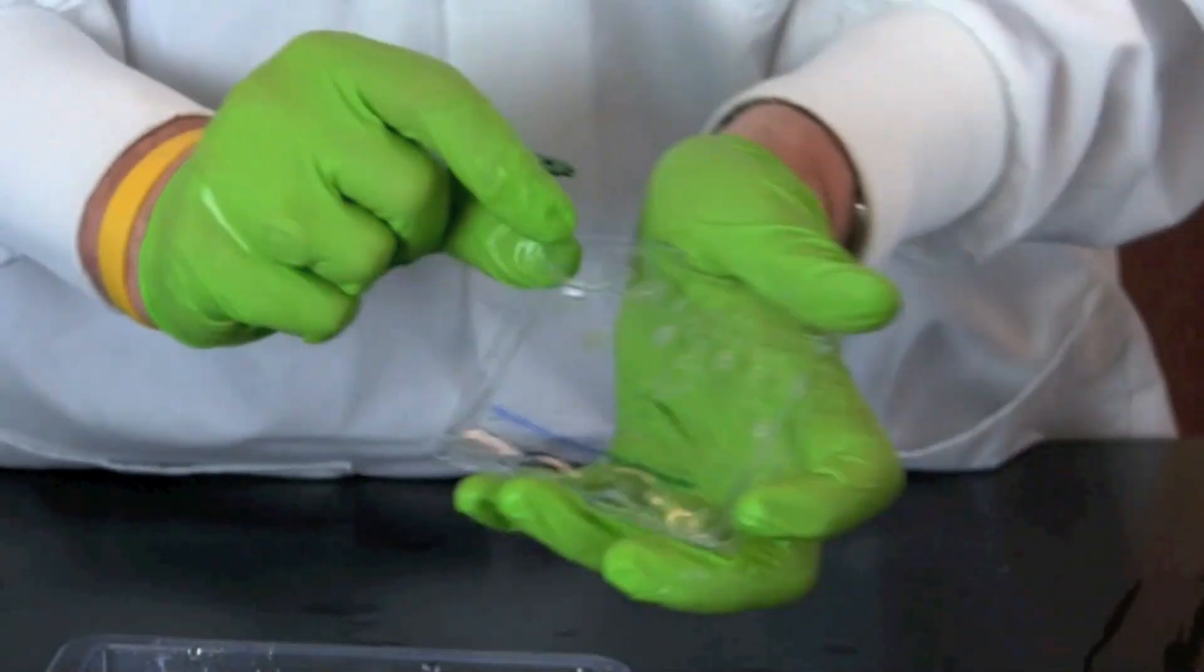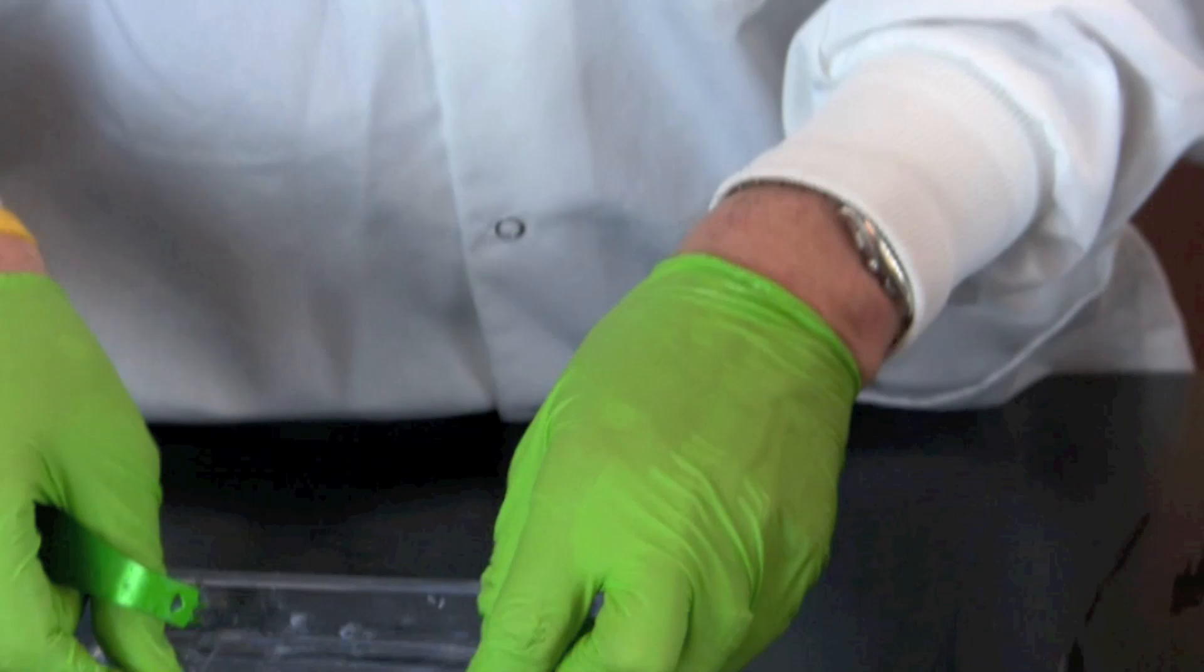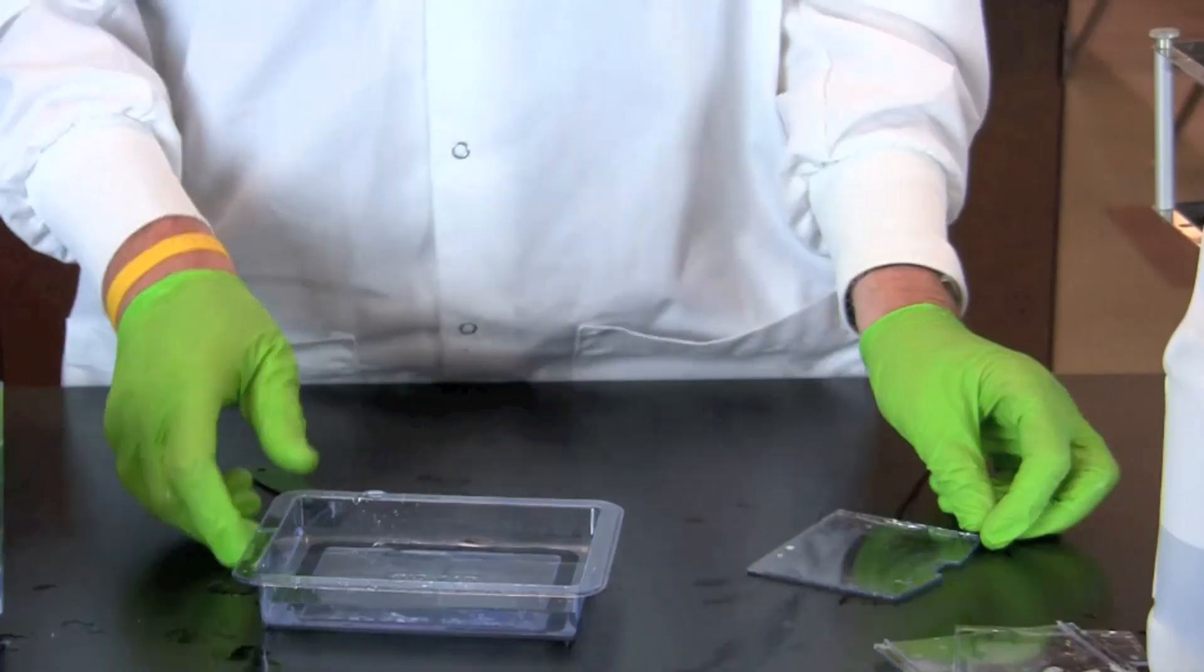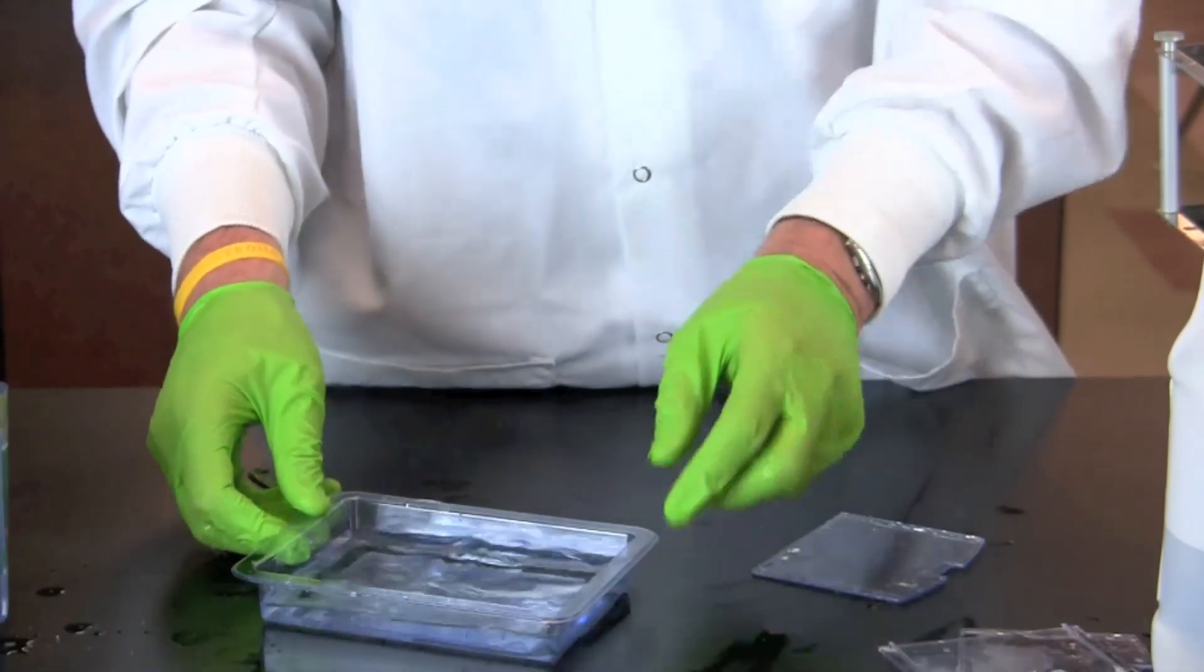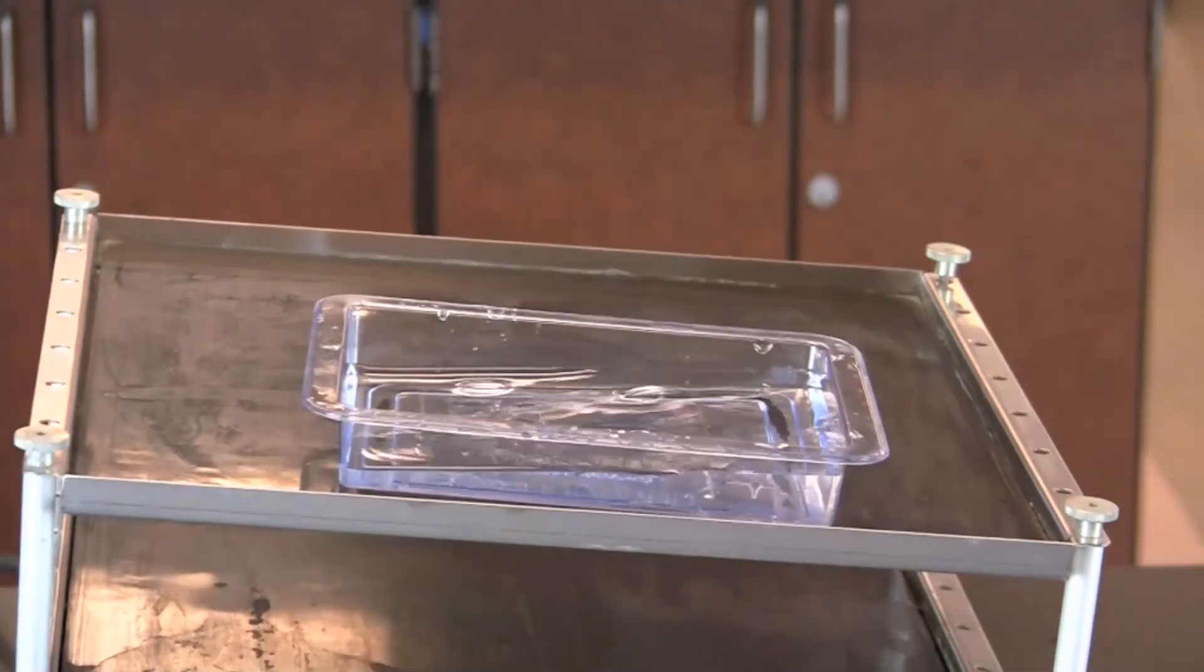Very gently transfer the gel into a staining tray filled with tap water. If time permits, rinse the gels three times for five minutes. This will remove chemicals and provide for better staining.